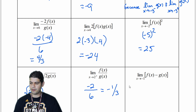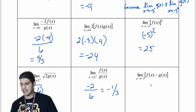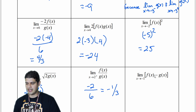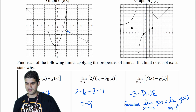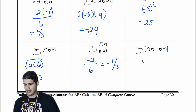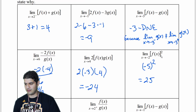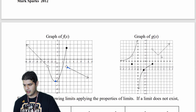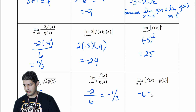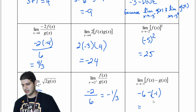The last problem: f of x minus g of x as x approaches negative 1. At negative 1, f of x has a y-value of negative 6. And g of x at negative 1 is negative 1. So we have negative 6 minus negative 1, which becomes negative 6 plus 1, giving us negative 5.